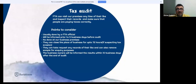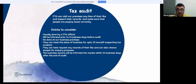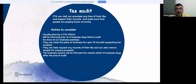Tax audits can happen — there are no predetermined dates. The FTA can visit your premises anytime, though this usually happens when there are indications of violations, tax evasion, or tax avoidance. Companies will be informed five business days prior to a premises visit. The FTA can close your business for up to 72 hours if they suspect tax evasion. They can take records and remove samples for inquiry purposes, and the business owner will be informed of audit results within 10 business days after the audit ends.